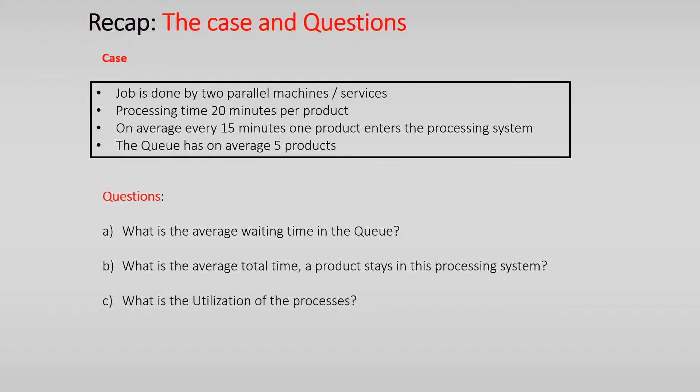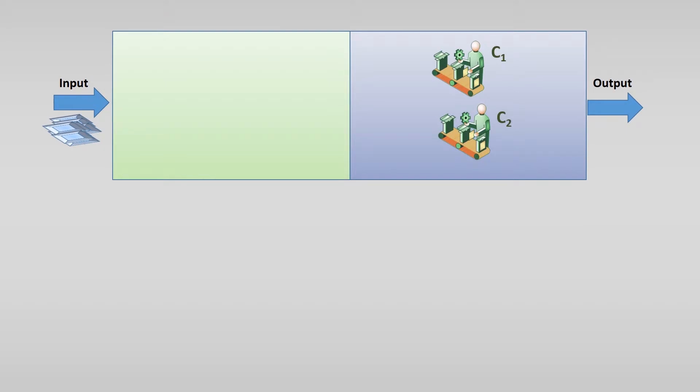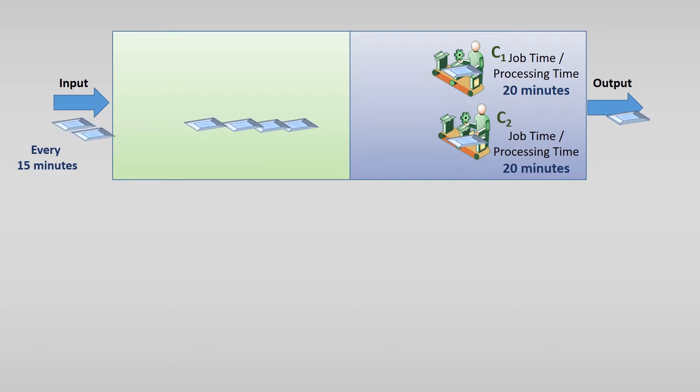Let's start. We have two parallel machines or services and each service takes 20 minutes. Every 15 minutes a product enters the system, usually it comes in the queue first before it is handled by one of the two services. On average 5 products are in this queue.